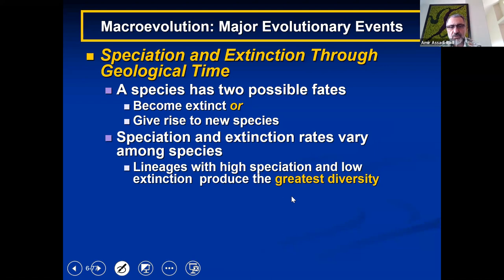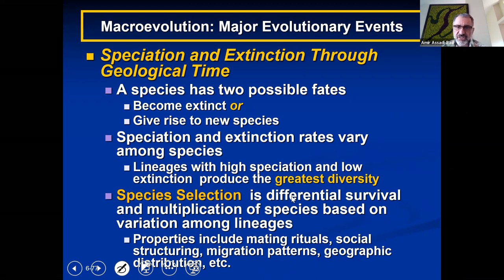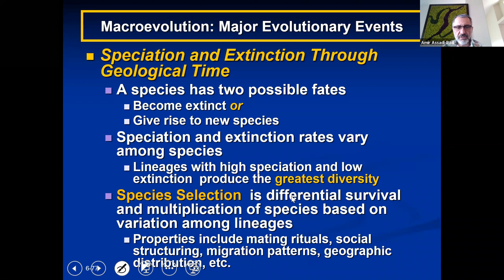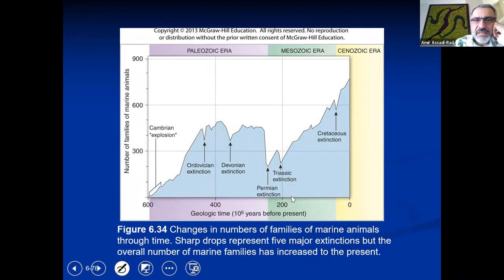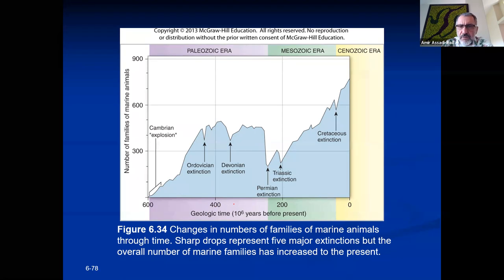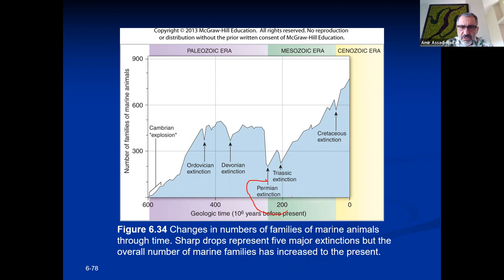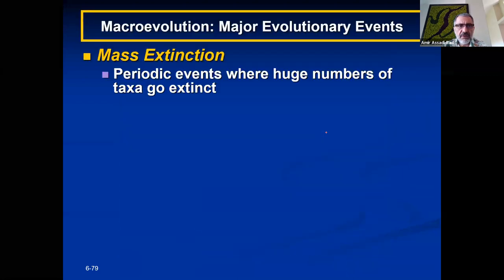Speciation and extinction rates vary among species. A lineage with high speciation and low extinction produces the greatest diversity. There have been great extinctions throughout the history of life. Mass extinctions are periodic events where large numbers of taxa disappear. They appear to occur every 26 million years; five have been traumatic, causing evolutionary bursts. The most accepted theory is bombardment by comets and asteroids. Massive temperature fluctuations are also a cause. And biological forces like diseases are a third possibility, though hard to prove.